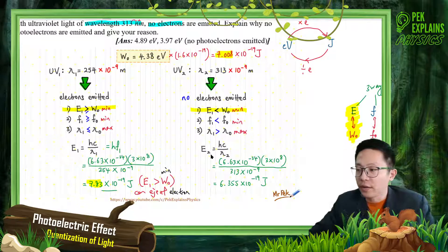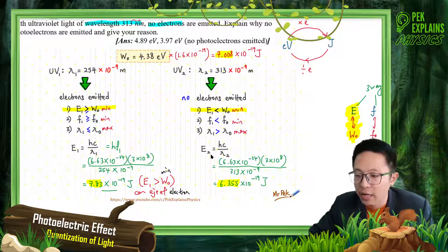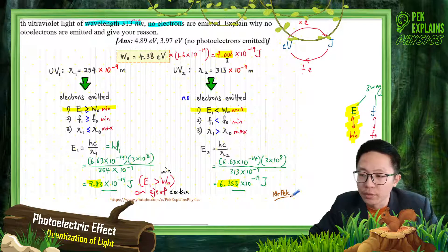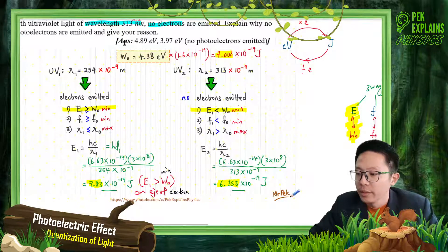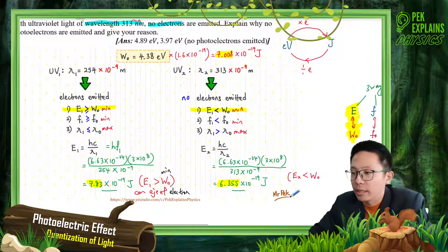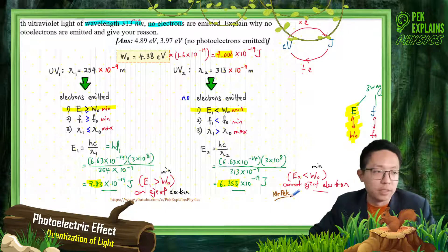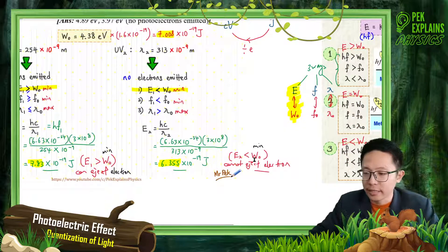Comparing the energy of photon 2 — 6.355 × 10⁻¹⁹ joules — with the work function of 7.008 × 10⁻¹⁹ joules: the photon does not have enough energy to overcome the work function. The energy of the incident photon is less than the minimum energy required. This is the minimum energy required, but the photon does not have enough energy to eject the electron. So, the energy of the incident photon is less than the work function.